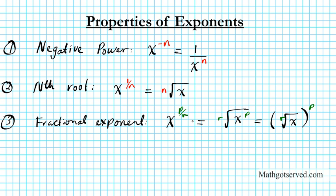So r is basically the root and p is the power. The numerator is the power and the denominator is the root. The root always comes on the outside next to the radical sign, and then the power is applied inside or outside in the two formulations.